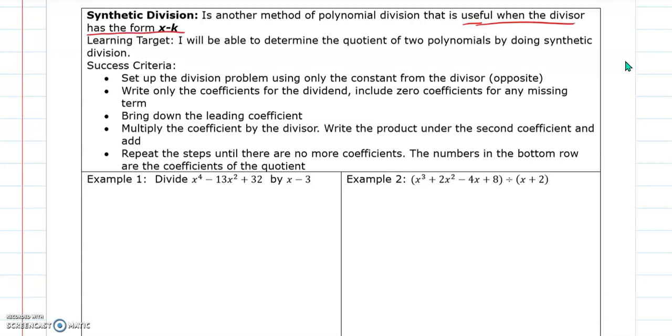So if you look at example one, we have divide x to the fourth minus 13x squared plus 32 by x minus 3. This is your divisor right here, this x minus 3. Okay, so first step is we're going to set up the division problem using only the constant from the divisor, but we're going to take the opposite. So if my divisor is x minus 3, we're going to look at the constant of negative 3, but we're going to take the positive version. And I'm going to start with writing that.